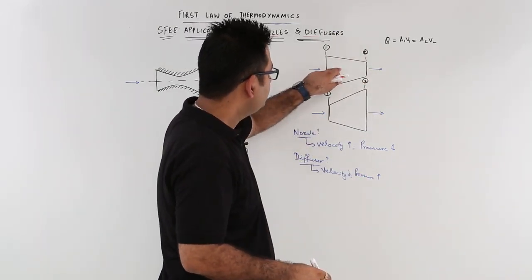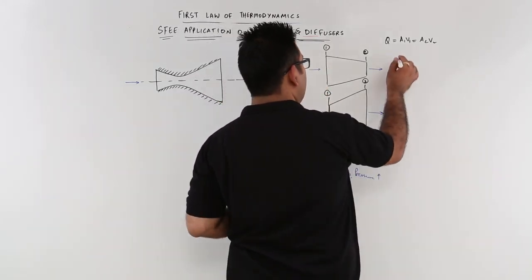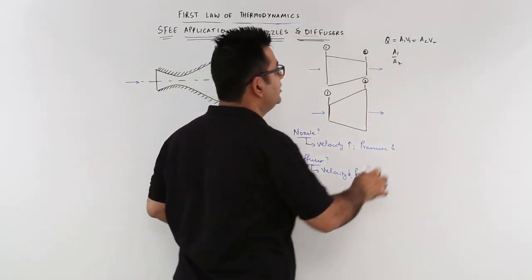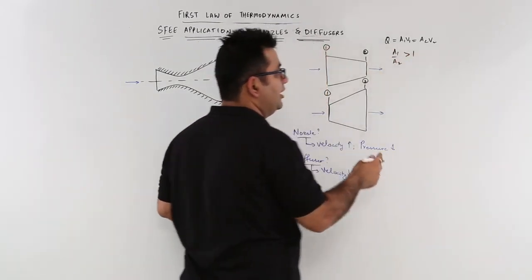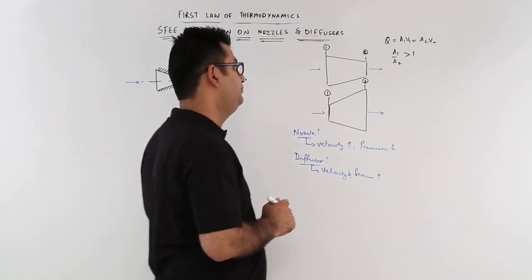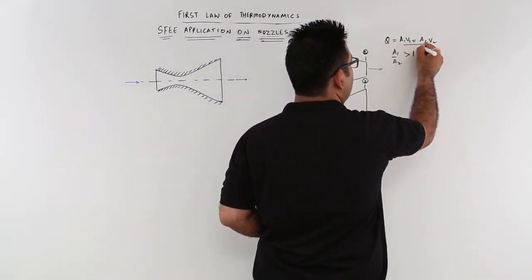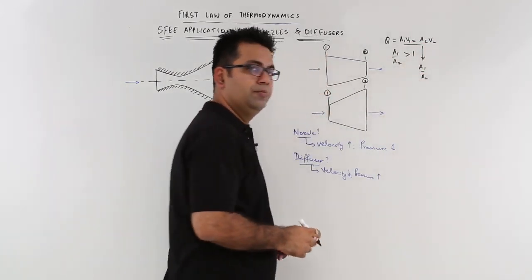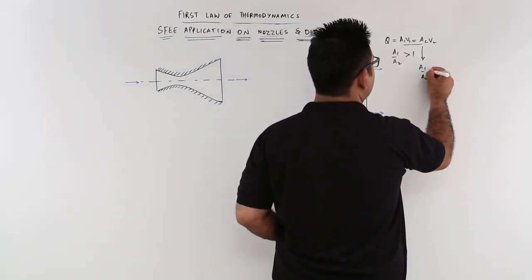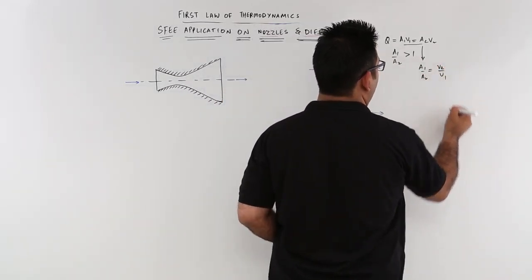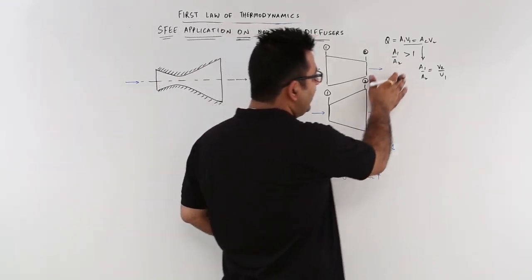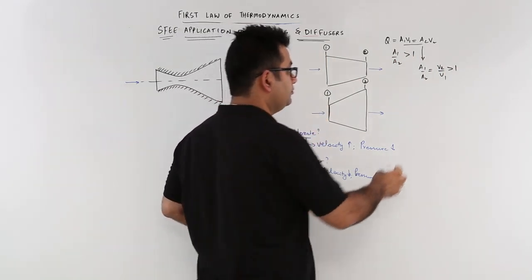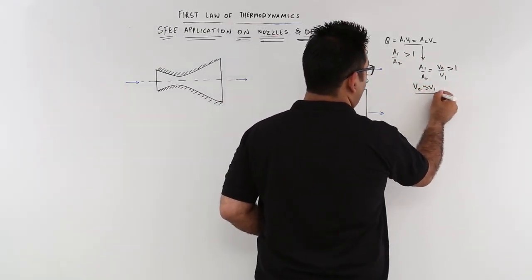Now in the first diagram, we know that the area 1 by area 2, this ratio is greater than 1 because area 1 is more than area 2. So if you compare these two equations, you would have a1/a2 equal to v2/v1. Now because a1/a2 is more than 1, so will be v2/v1. This means that v2 would be more than v1.